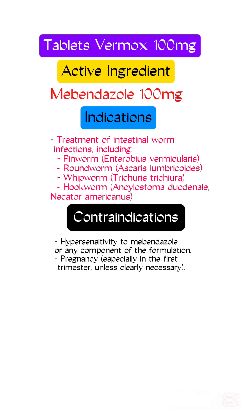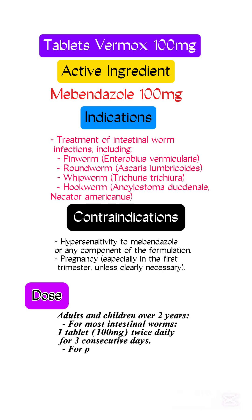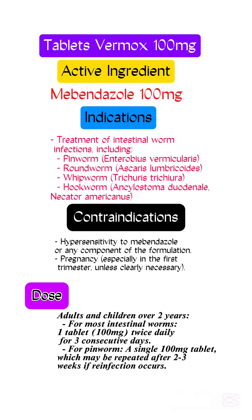Dose: adults and children over two years — for most intestinal worms, 100 milligrams twice daily for three consecutive days. For pinworm, a single 100 milligram tablet, which may be repeated after two weeks if reinfection occurs.